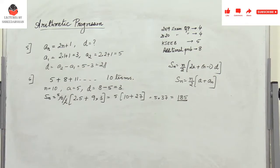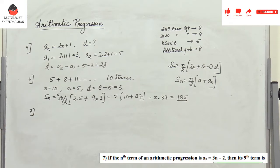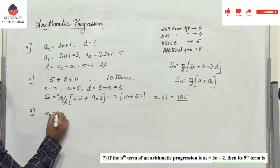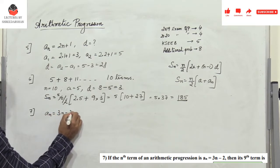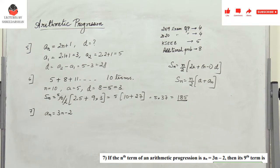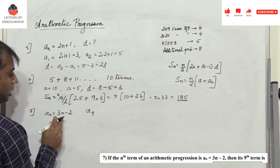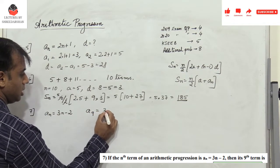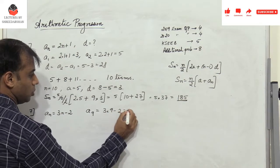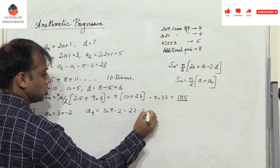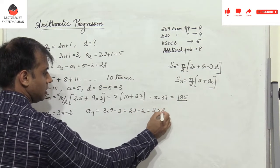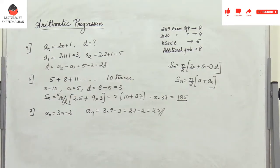The next one-mark problem appeared in September 2020: the nth term of an arithmetic progression is 3n - 2, find the ninth term. To find a₉, put n = 9: 3 into 9 minus 2 gives 27 minus 2, which is 25.